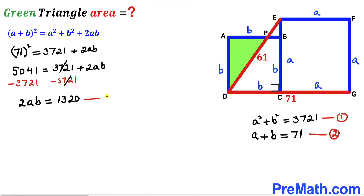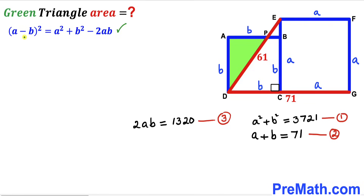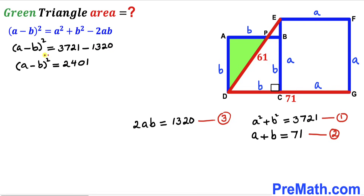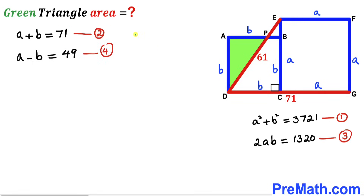Now let's recall the identity: (a − b)² = a² + b² − 2ab. We know a² + b² = 3,721 and 2ab = 1,320, so (a − b)² = 3,721 − 1,320 = 2,401. Taking the square root of both sides, a − b = 49. I'll label this equation number four.